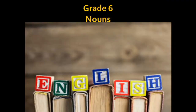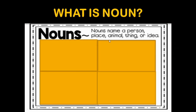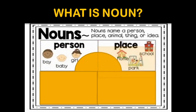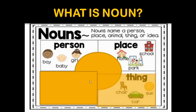Bismillahirrahmanirrahim, assalamu alaikum, Grade 6. Today we are going to study about nouns. A noun is a name of a person, place, animal, time, or idea. A person can be any person — boy, baby, girl. A place can be home, school, park, market. Things like tank, chair, car, and sun are also nouns.